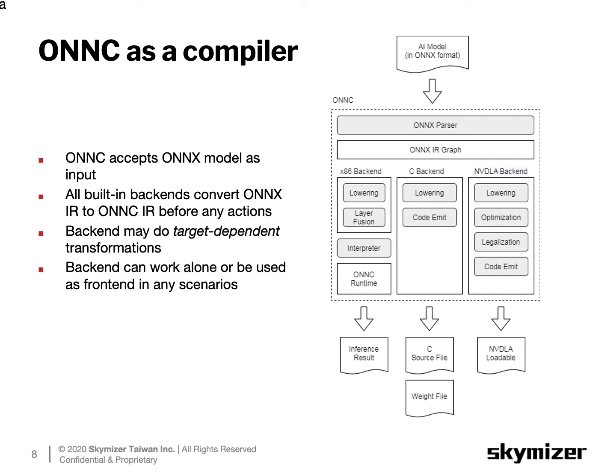After lowering, every backend has different ways to proceed. In the x86 backend, before connecting to the interpreter, there is a layer fusion pass which fuses a Conv and ReLU operator pair into a single ONNC IR to save memory and improve performance. Users can implement more layer fusions for further improvement; in the interpreter, each operator calls an ONNC runtime API to do the computation. In the C backend, no additional IR graph processing is done before emitting a C source file. In the NVIDIA backend, graph-level optimizations and a legalization pass are performed before code emit, where all required loadable information and target-dependent optimizations are also handled.